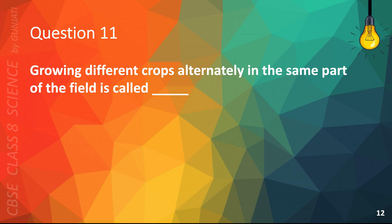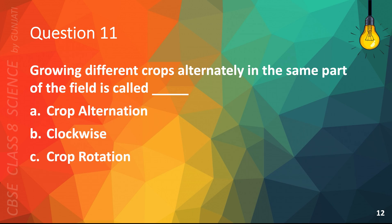Question 11. Growing different crops alternately in the same part of the field is called: A. Crop alternation, B. Clockwise, C. Crop rotation, or D. Anticlockwise.